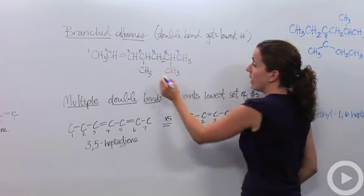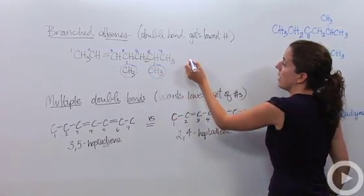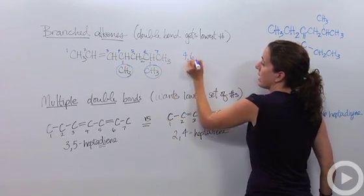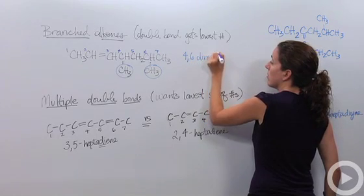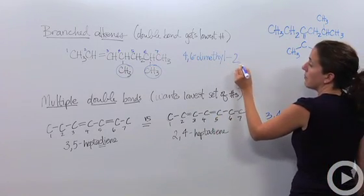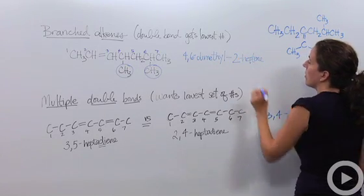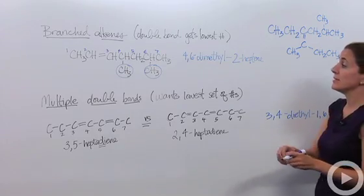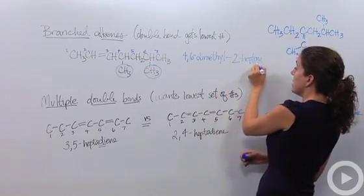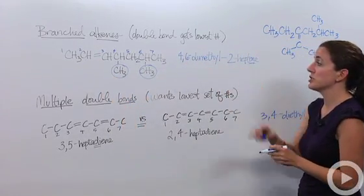Now we have some branching — these are methyl groups. Because there are two of them, and they're on the fourth and sixth carbons, we name them 4,6-dimethyl. And since the parent chain is seven carbons with a double bond at position two, the full name is 4,6-dimethyl-2-heptene. This tells us the methyls are at C4 and C6, and the double bond is between C2 and C3.